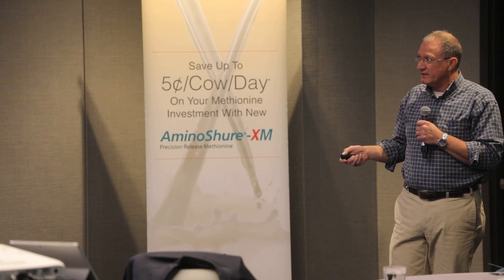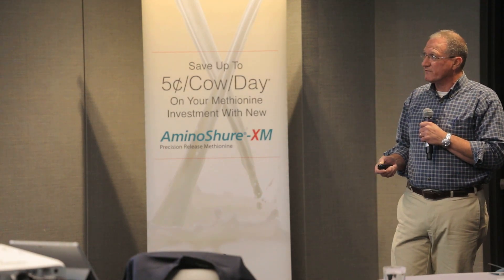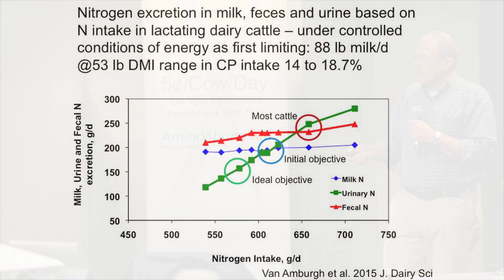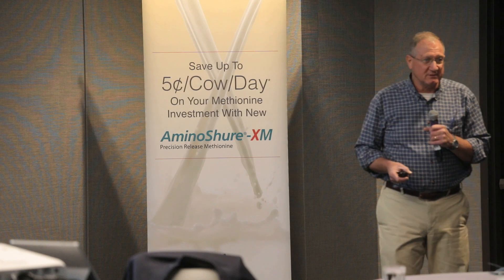So it basically says: if they don't need it, they're going to pee it away. The question is where should we be and how do we make them more efficient? When you look at this data across lots of studies, nitrogen intake goes up but milk protein nitrogen — there's no big change there. Here's fecal nitrogen, here's urinary nitrogen. Most dairies are running here right now: we're putting out more urine and fecal nitrogen than we're putting out milk protein. We have to change this.